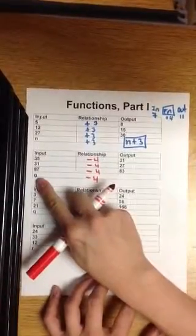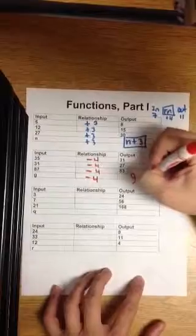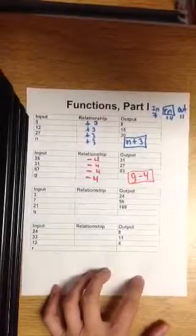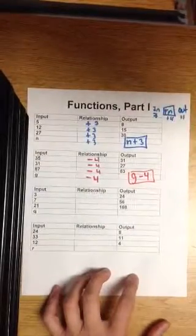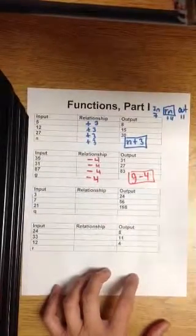So if I put in any number like G, you take away 4. That's the function rule. It's minus 4. For example, if you have 10 as your input, you take away 4. The output would be 6. Next one.